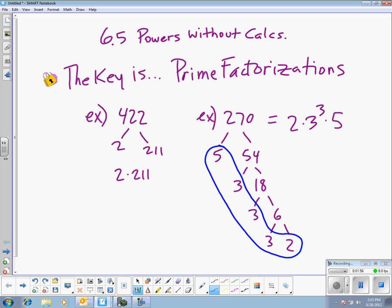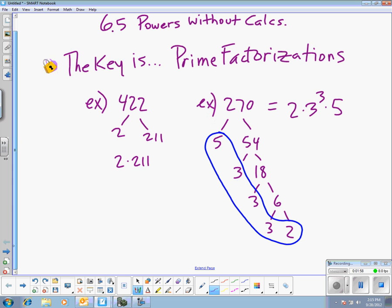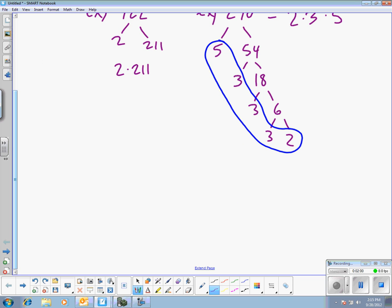So this is the key to being able to solve problems like this one. Let's start with something like 64 to the 3 halves. Okay, and this one you could almost do without prime factorization. This is going to be the square root of 64, which is 8, and then 8 cubed.